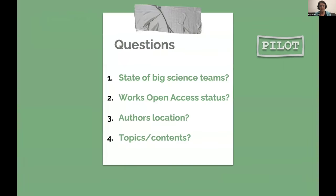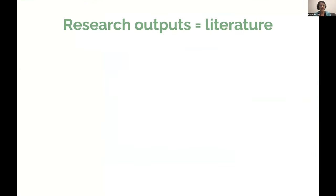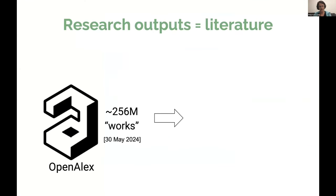This pilot project is about big science teams. I often work in collaborations of different sizes, and it seems that science done by really big teams of authors is becoming increasingly common. I decided to use OpenAlex to investigate it. Some additional questions include: what's the open access status of works authored by big teams, where such authors are located, and what types of topics they work on?